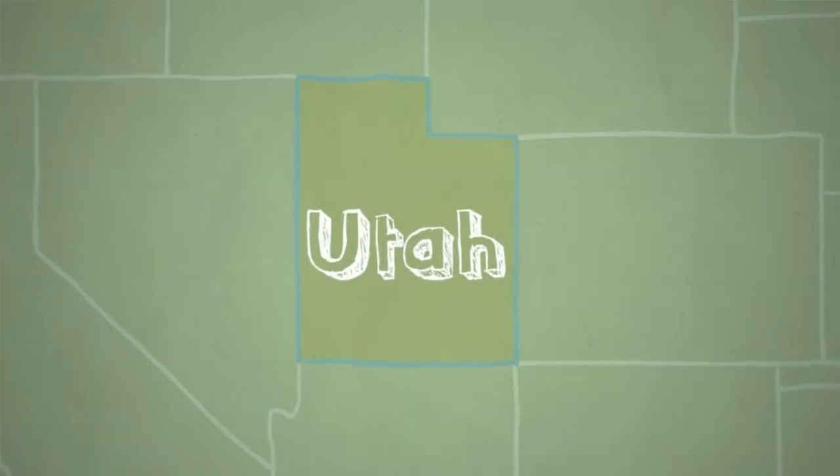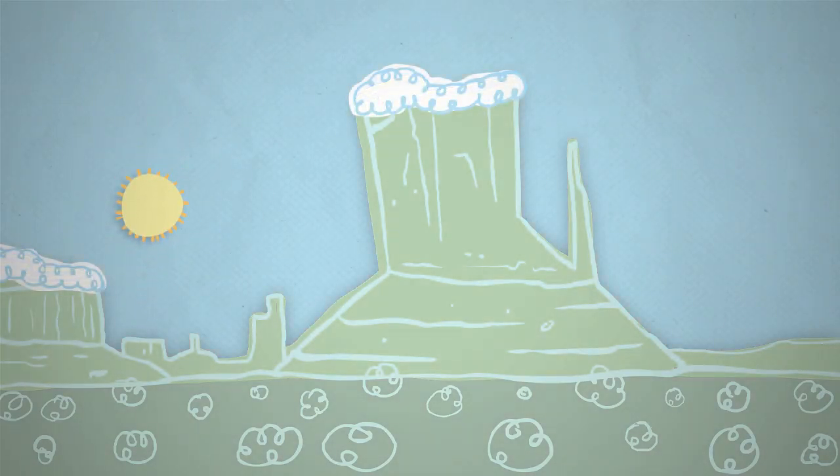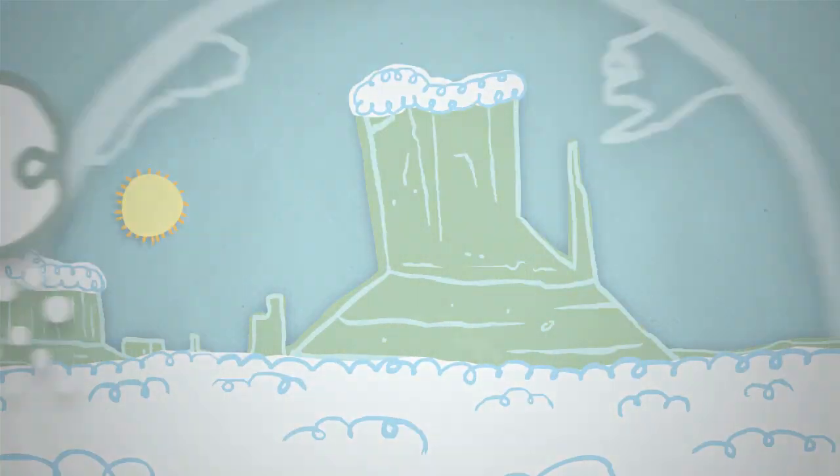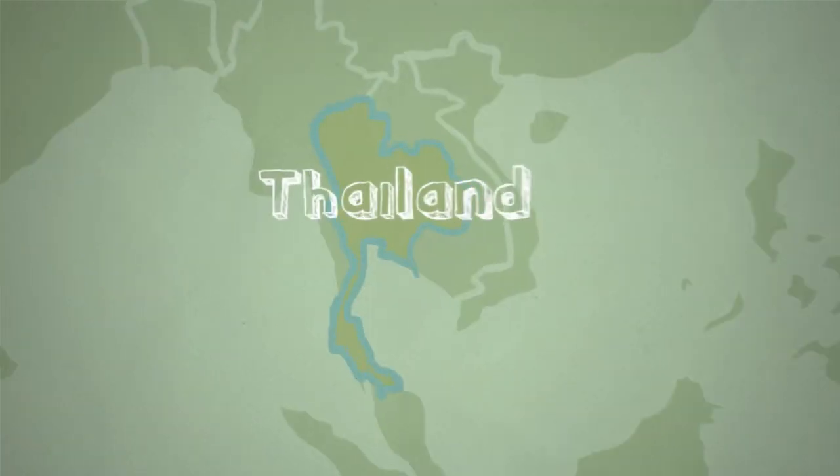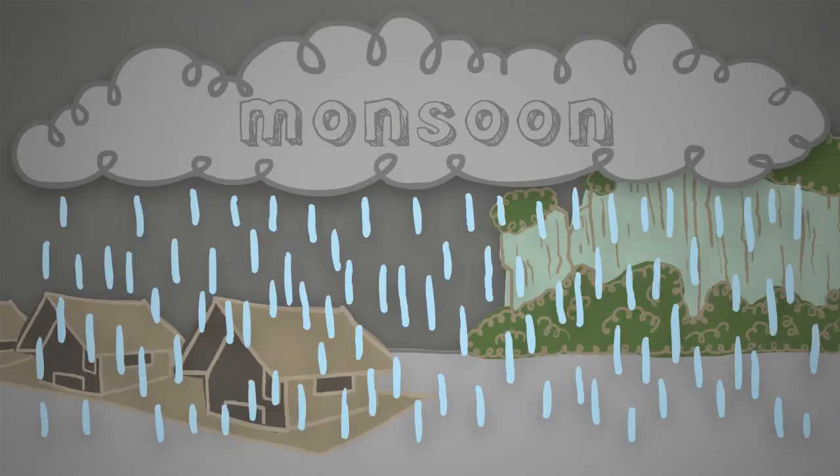For example, many parts of Utah have warm, dry summers and cold, mostly sunny winters with a few big snowstorms. Meanwhile, a place like Thailand is hot and humid year-round, with periods of heavy rain, called monsoons.